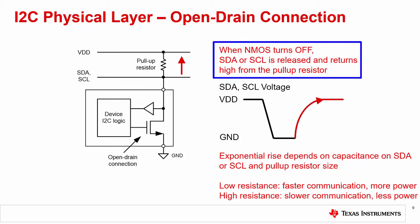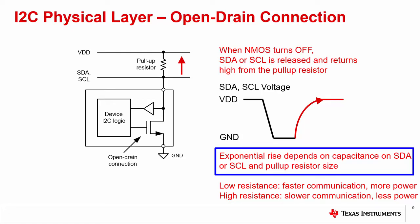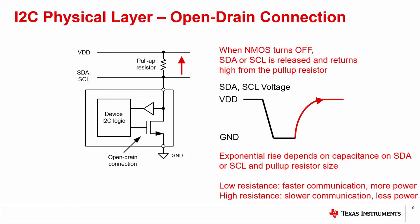When the NMOS is off, the device stops pulling current and the pull-up resistor pulls the SDA or SCL line to VDD, pulling the line high. Through control of this open drain connection, both SDA and SCL can be set high and low, enabling the I2C communication. Because of capacitance on the I2C communication line, the SDA or SCL line discharges with an exponential RC time constant, depending on the size of the pull-up resistor and capacitance on the I2C bus. Typically, pull-up resistors are set between 1 kilohm to 10 kilohms. The bus speed may help determine the size of the resistance.